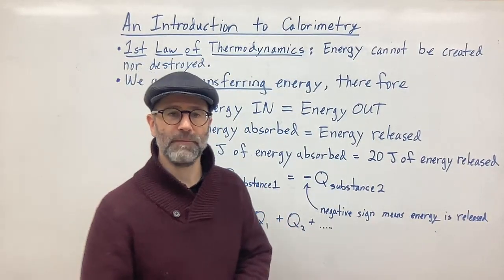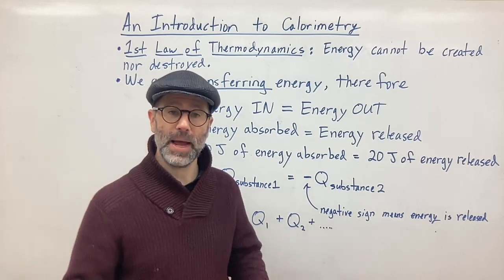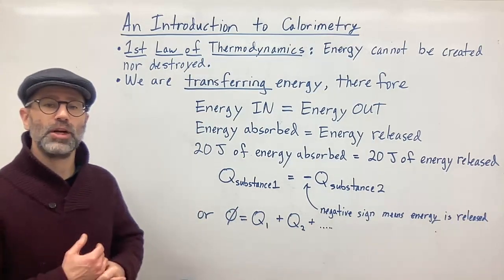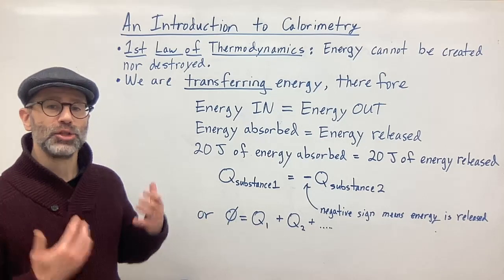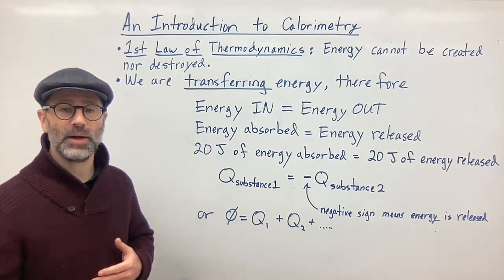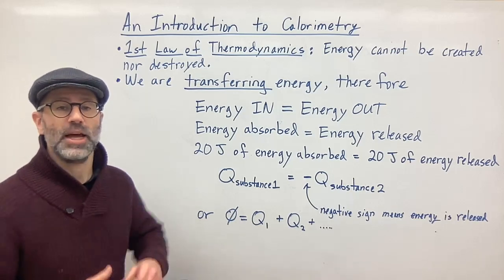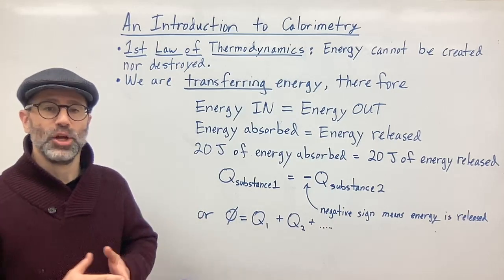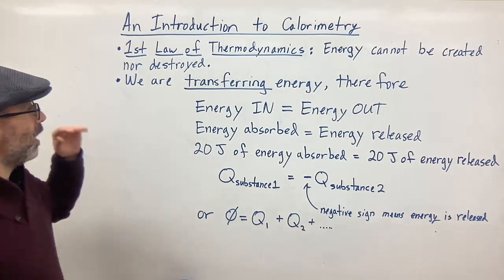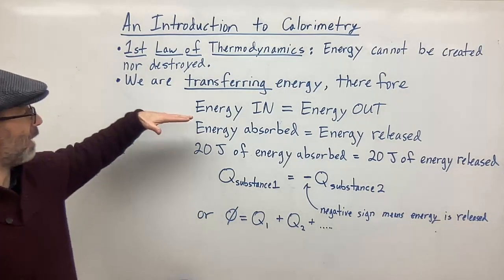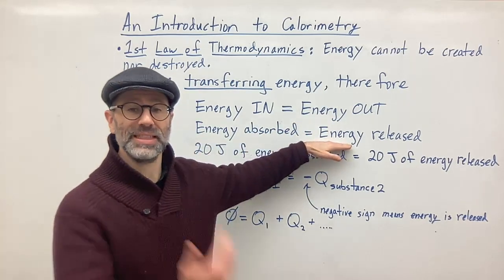Now we're going to get into the first law of thermodynamics and how this relates to the transfer of energy and how it's going to help us with our calculations. The first law of thermodynamics says that energy cannot be created nor destroyed. So in calorimetry problems, we are transferring energy — energy is going to be absorbed by one object that is released by another. We're assuming that no energy is lost to the environment; it's a completely contained, closed system.